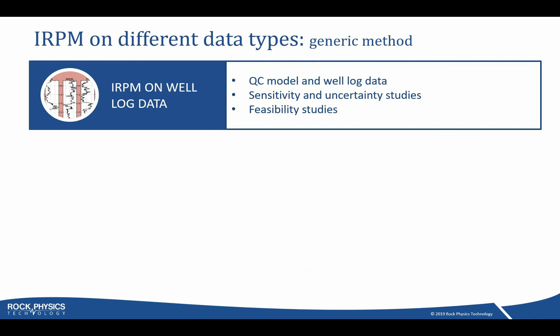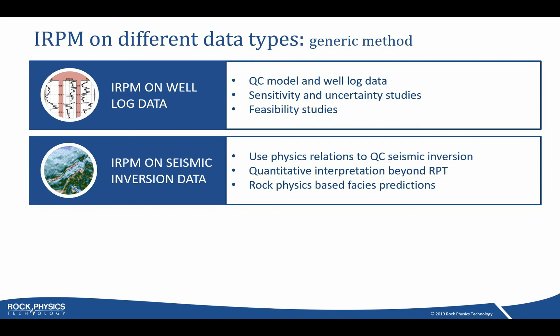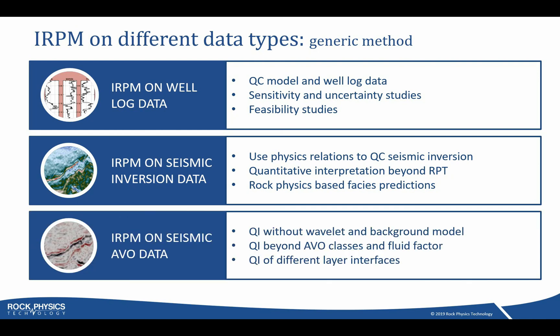IRPM is a generic method which can be used on many types of data. For example, it can be used on well log data, and on seismic inversion data — data which has already gone through an inversion from the seismic response to properties such as acoustic impedance, VP/VS ratio, and density. It can also be used on intercept and gradient data, so-called AVO data. In rock physics technology, it has even been used in a joint elastic-electrical inversion on well log data.